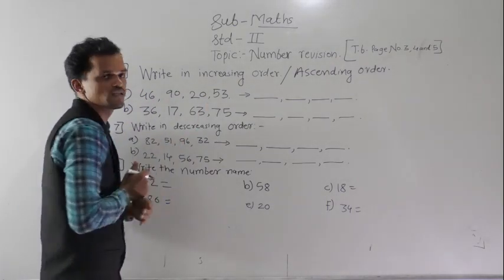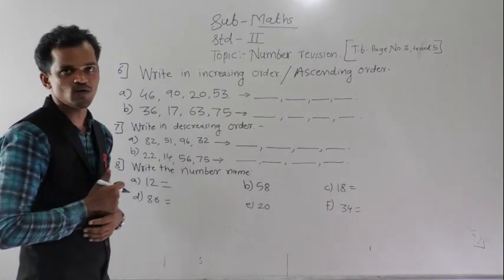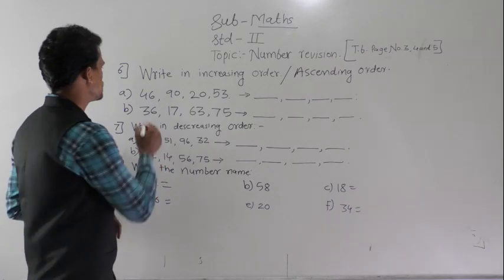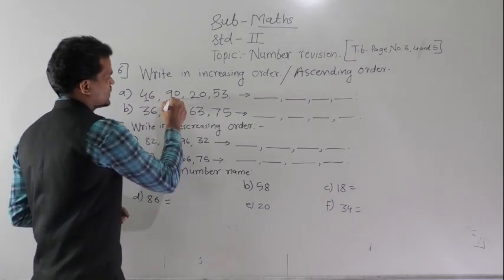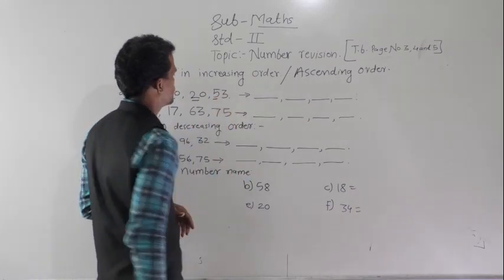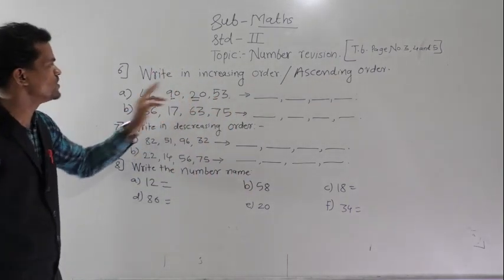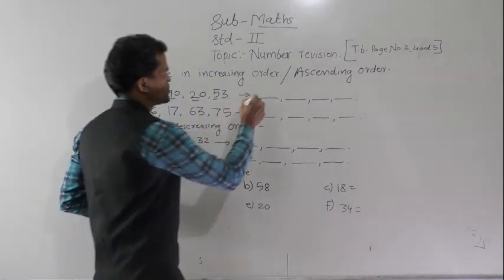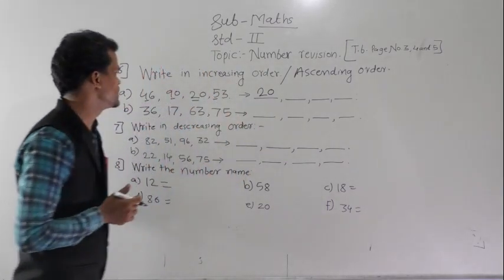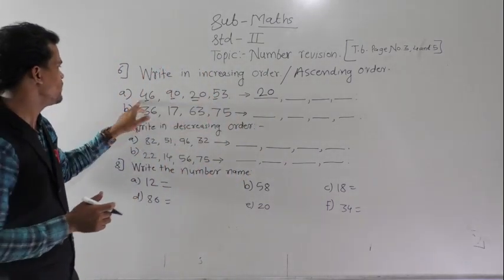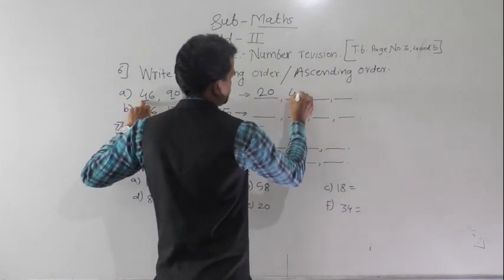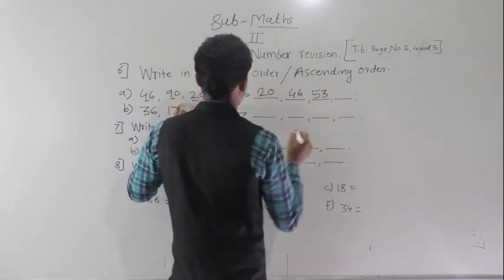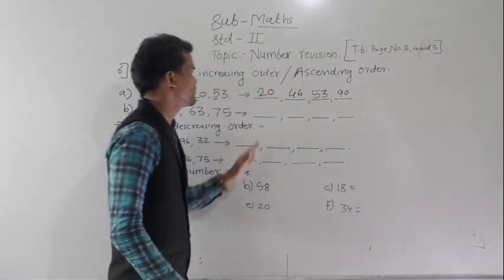These are two digit numbers, so we have to compare the tens digit. The tens digits are 4, 9, 2, and 5. Here 2 is the smallest tens digit, so 20 is the smallest number. After 20, the next number is 46, then 53, and at last 90.